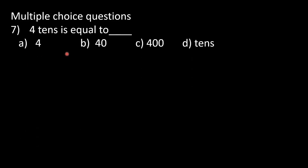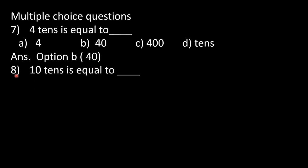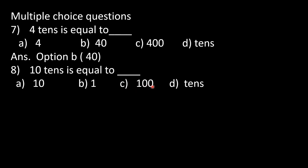In question number 7: 4 tenths is equal to dash. To find the answer, we multiply 4 by 10, giving us 40. Options: A) 4, B) 40, C) 400, D) tenths — option B is correct, that is 40. In question number 8: 10 tenths means we multiply 10 by 10, giving 100. Options: A) 10, B) 1, C) 100, D) tenths — option C, 100, is correct.